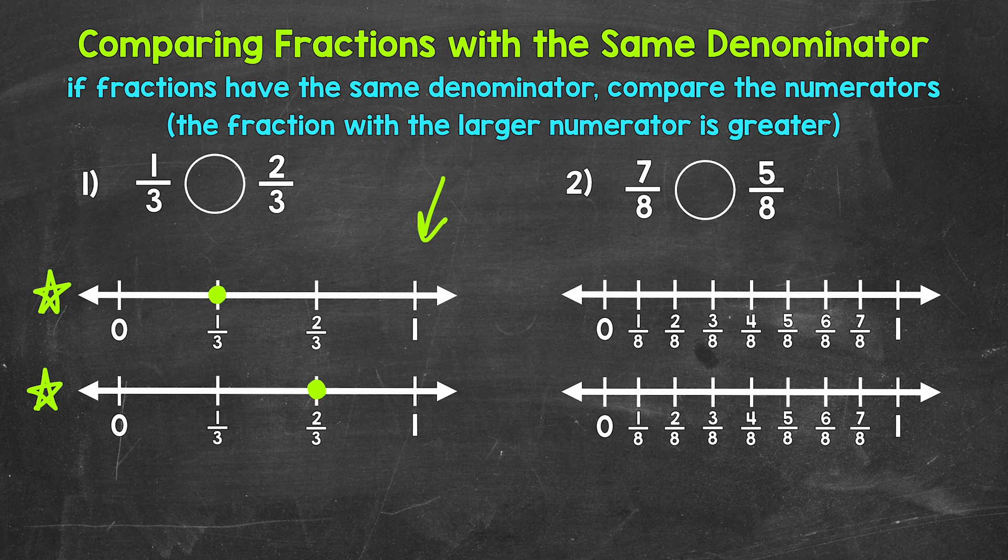Now remember, our comparison symbol always opens up towards whatever is greater. So our symbol goes like this. And we can read this comparison from left to right as one-third is less than two-thirds.